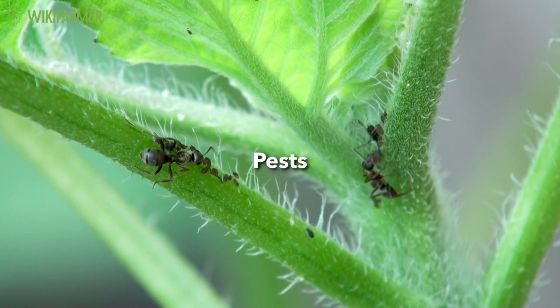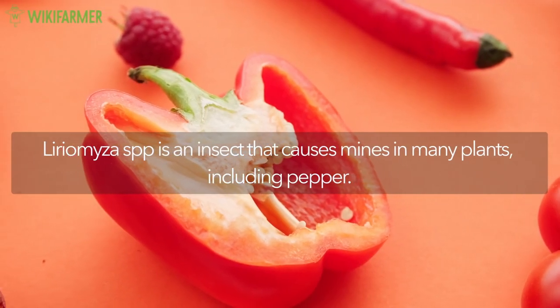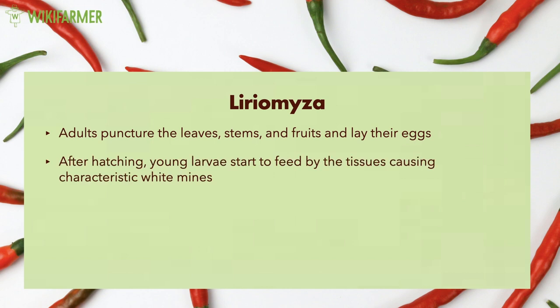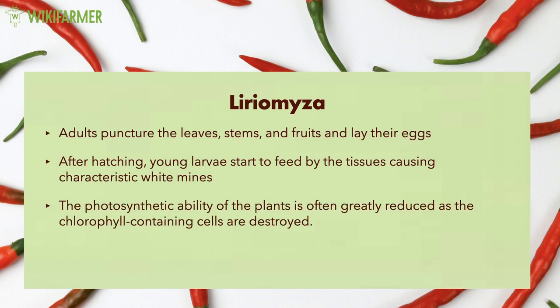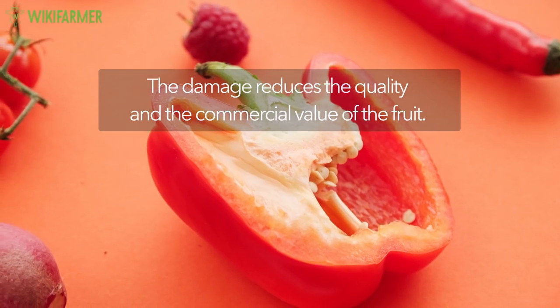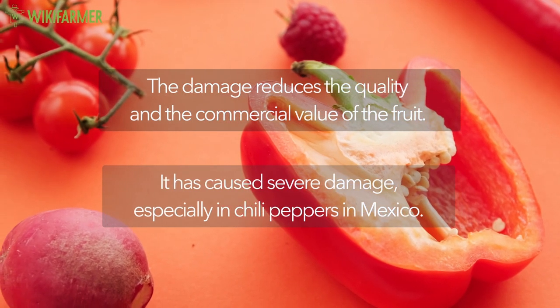Common Pests and Diseases. Liriomyza. Liriomyza sp. is an insect that causes mines in many plants, including pepper. Adults puncture the leaves, stems and fruits and lay their eggs. After hatching, young larvae start to feed on the tissues causing characteristic white mines. The photosynthetic ability of the plants is often greatly reduced as the chlorophyll-containing cells are destroyed. Infected leaves may fall, exposing plant stems to wind action and the fruits to sunscald. The damage reduces the quality and commercial value of the fruit. It has caused severe damage, especially in chili peppers in Mexico.